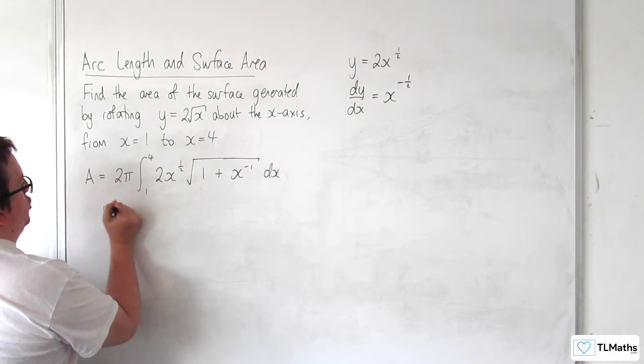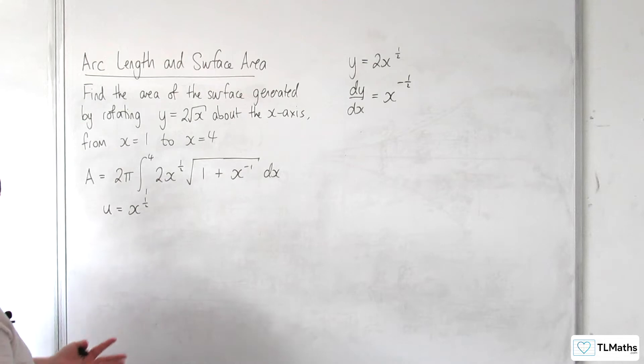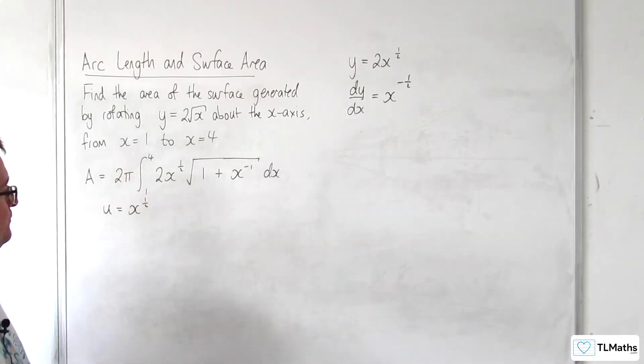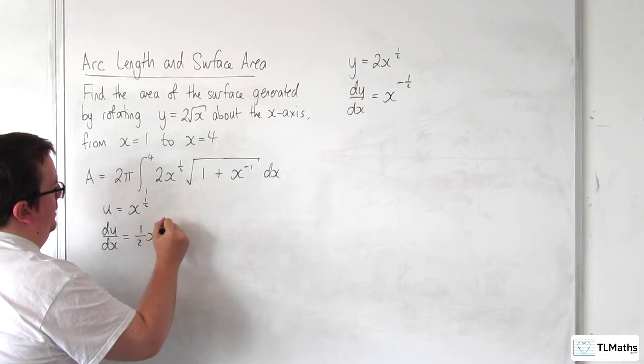I'm going to make a substitution, u is equal to x to the half, and we're going to see where we go from it. Not guaranteed to work, but best we can do. So du by dx is equal to 1 half x to the minus 1 half.